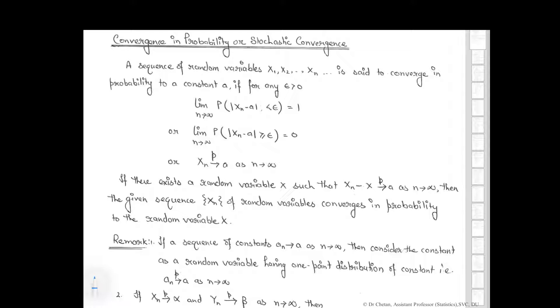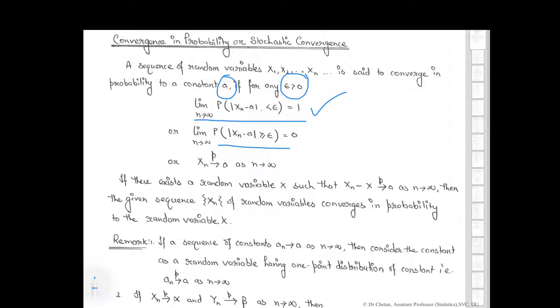Mathematically, a sequence of random variables x1, x2 is said to converge in probability to a constant a, for any epsilon greater than 0, if as n tends to infinity, the probability of |x_n minus a| less than epsilon is equal to 1. Or equivalently, the limit as n tends to infinity of the probability of |x_n minus a| greater than or equal to epsilon is equal to 0.